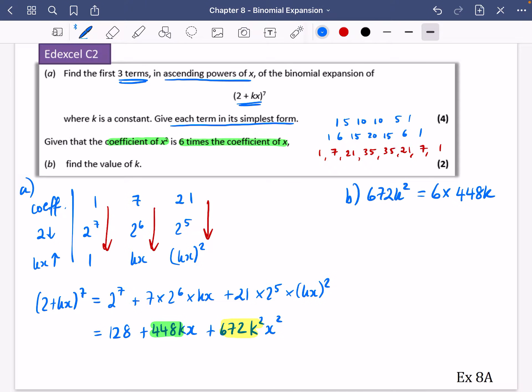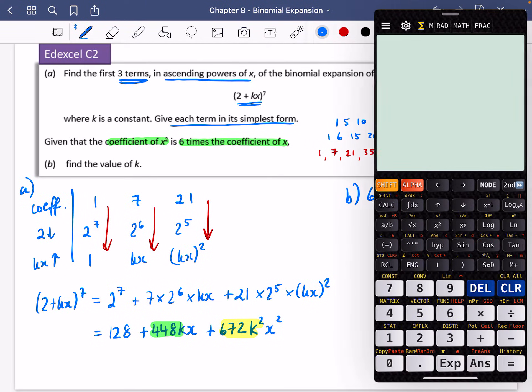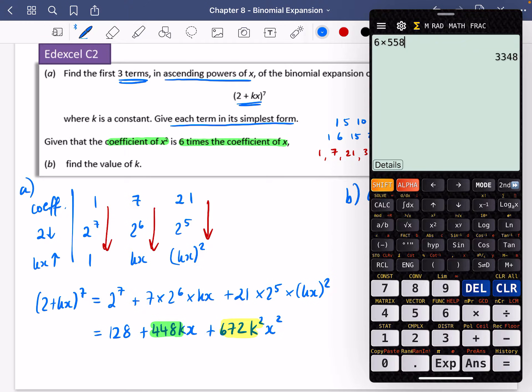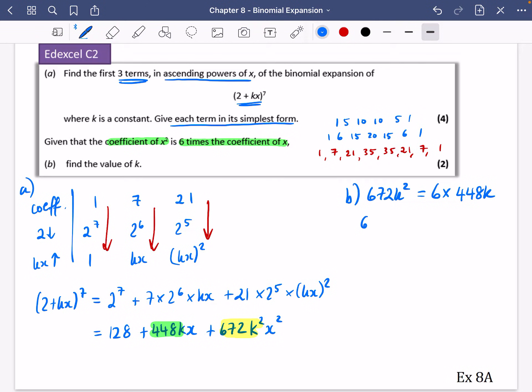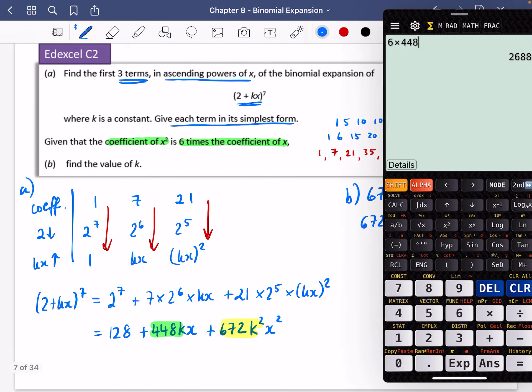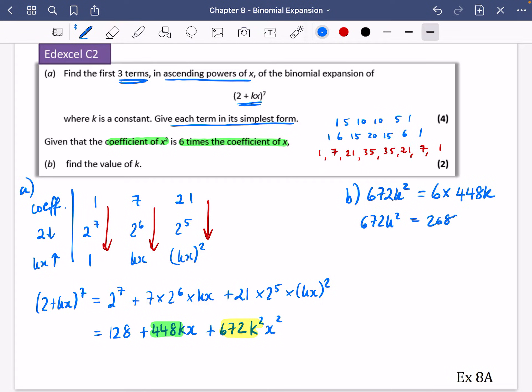So I could end up, let's just actually start solving this. I'm going to do 6 times 448. Let's just simplify that. And I get 2688. So 672k squared equals 2688k.